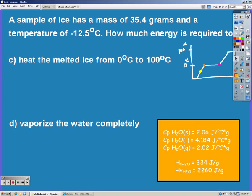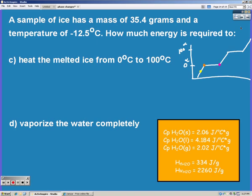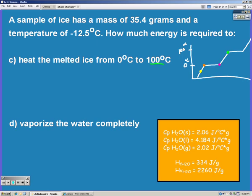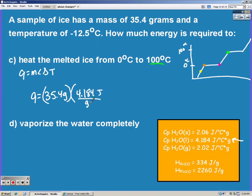Now we're going to heat that melted ice from zero degrees to a hundred degrees. So again, we're on a slant, we're changing temperature, so we're going to need to use our MCAT. Mass hasn't changed, we're on that second slant which is liquid, so we need to use the liquid Cp. And our change in temperature from zero to a hundred is a hundred. So you get 14,811.4 joules.